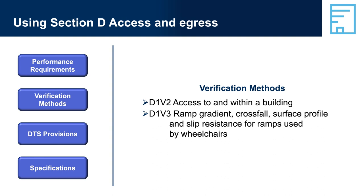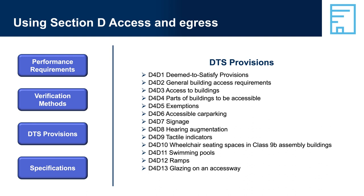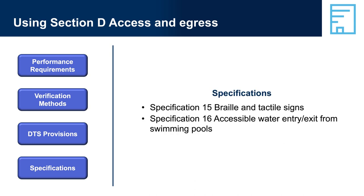Verification method D1-V3 provides a way to verify compliance with D1-P2, to provide safe movement to and within a building via ramps used by wheelchairs. Remember, a verification method is just one way to verify compliance via a performance solution. The relevant deemed-to-satisfy provisions in Section D are contained in Part D4, Access for People with a Disability. A number of these provisions apply differently in different building classifications. There are also two specifications supporting the accessibility provisions in Section D containing detailed information to apply the relevant DTS provisions.